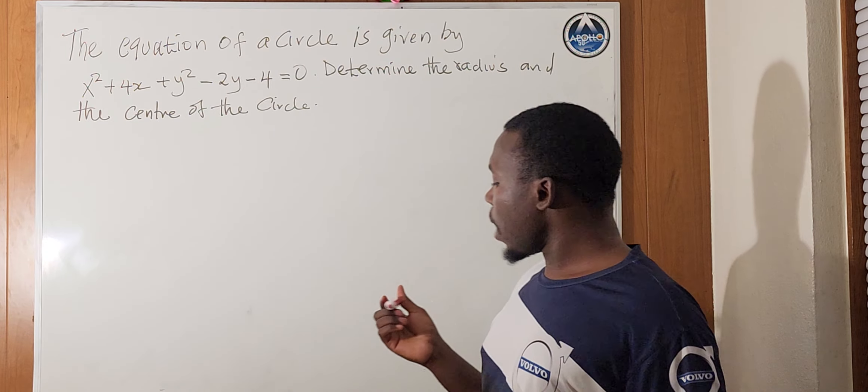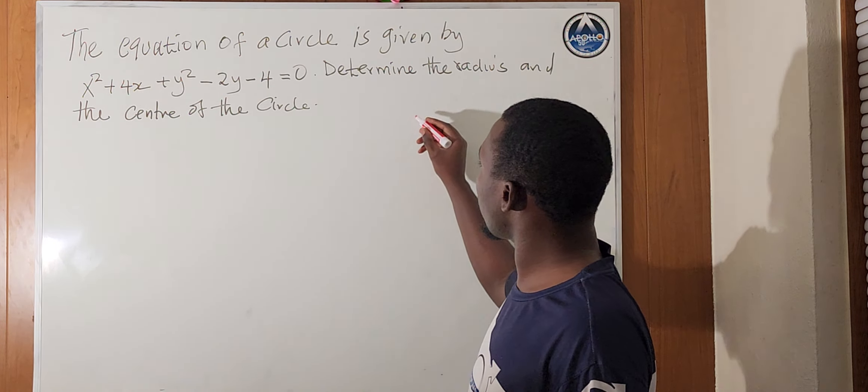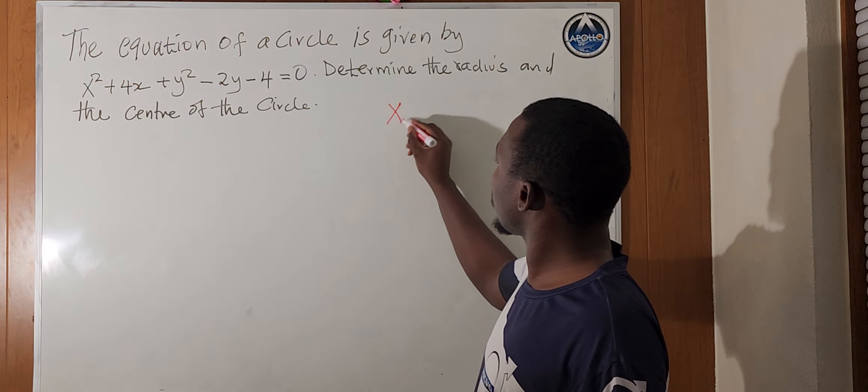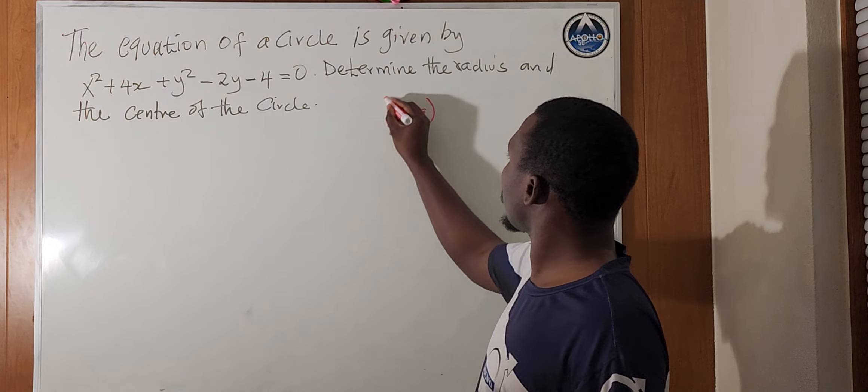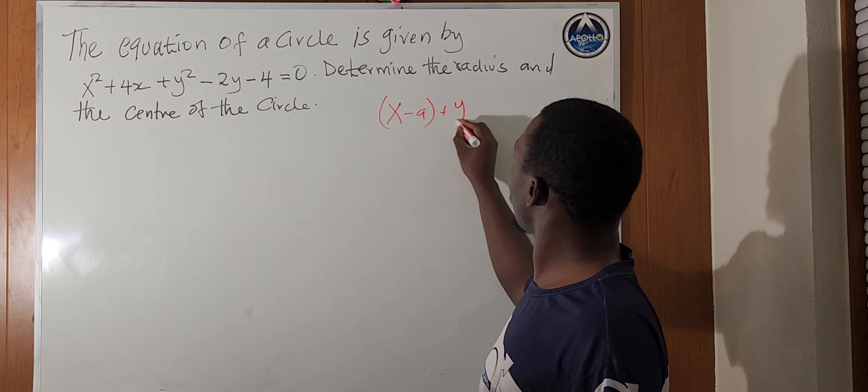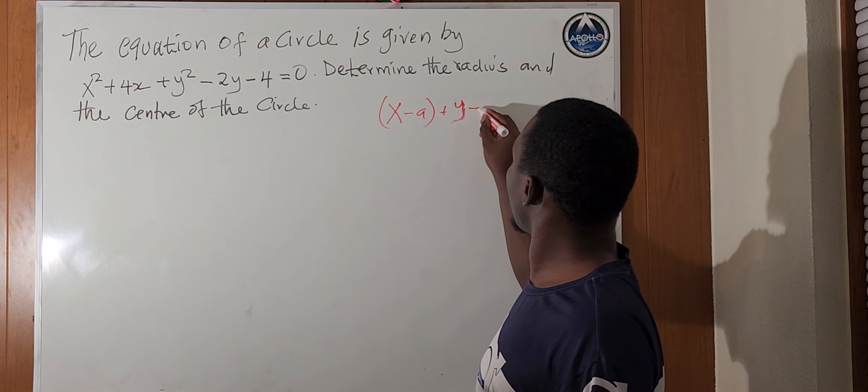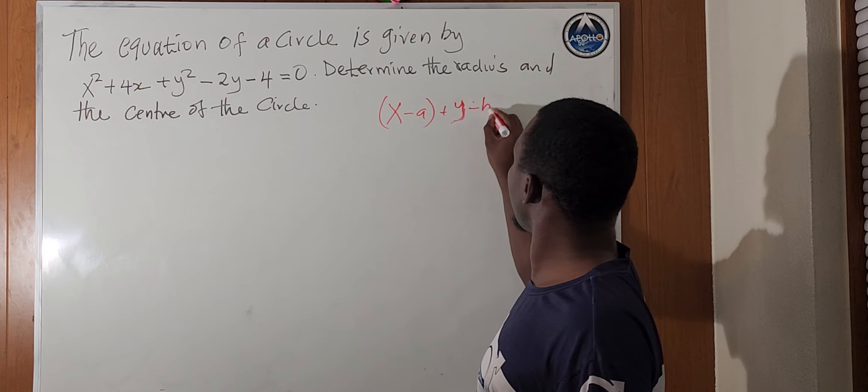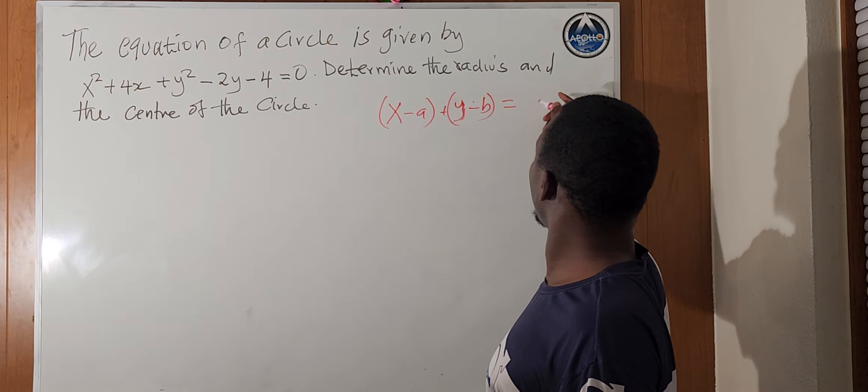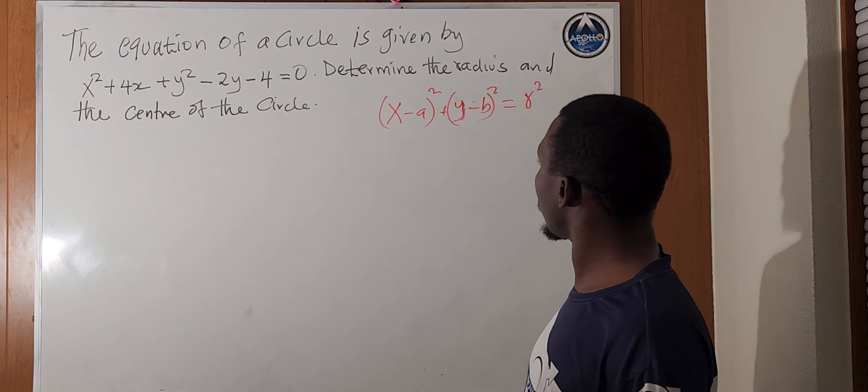Now, I'll remind you again one thing here from the equation of a circle. The equation of a circle is given by x minus a, plus y minus b, equals to r squared, if everything is squared here.